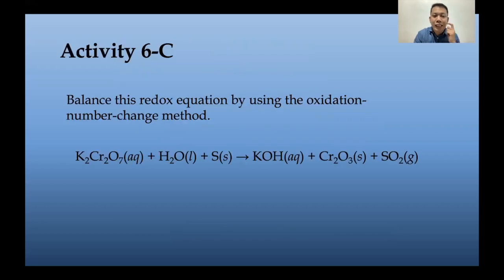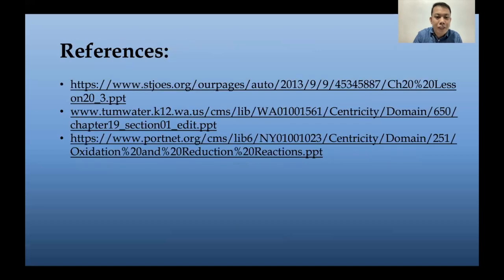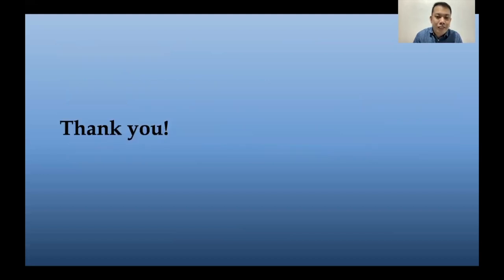For Activity C: balance this redox equation using the oxidation number change method — K2Cr2O7 + H2O + S forming KOH + Cr2O3 + SO2. For references, you can use the resources provided if you think the discussion is not enough, or download the PowerPoints used. Thank you so much for watching this video. Keep safe.